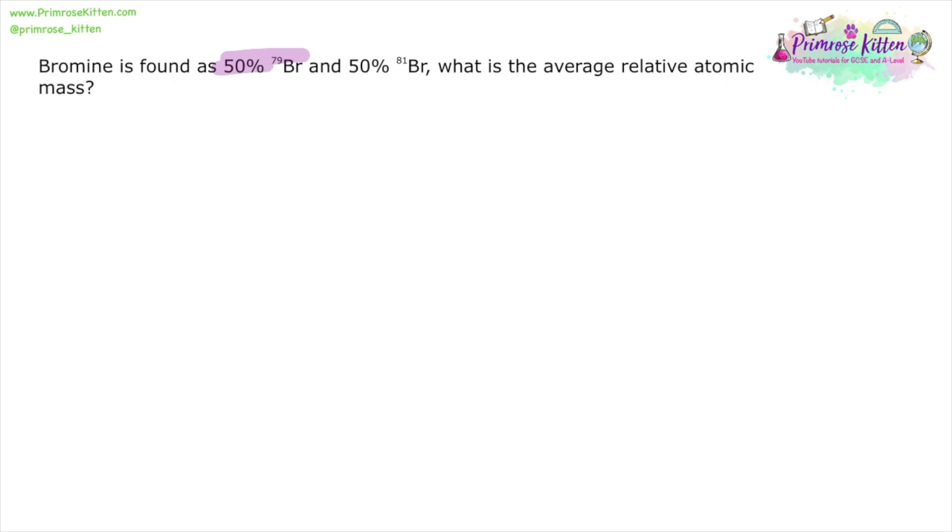Bromine is found as 50% bromine-79 and 50% bromine-81. What is the average relative atomic mass? Again, we can assume we have 100 atoms of bromine and that 50 of them are going to have a mass of 79, and 50 of them are going to have a mass of 81.